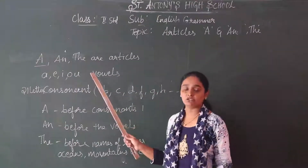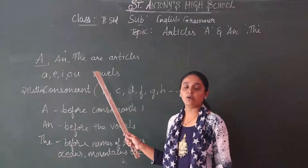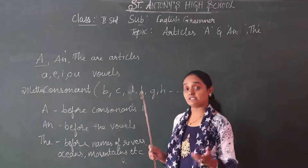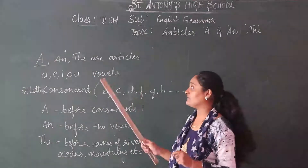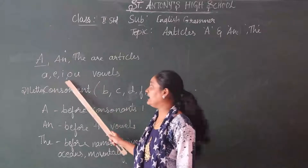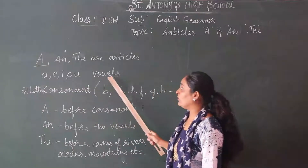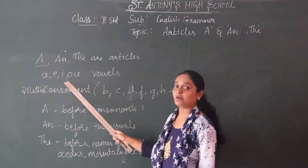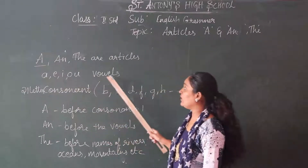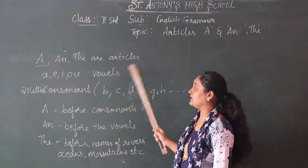So here you know vowels also, children. Do you know vowels? In the previous class, in the first category, you have studied what are vowels — A, E, I, O, U. So what are vowels? A, E, I, O, U are vowels.